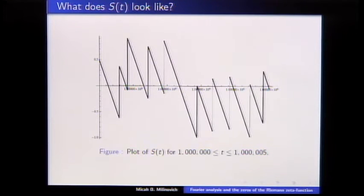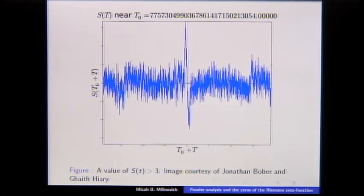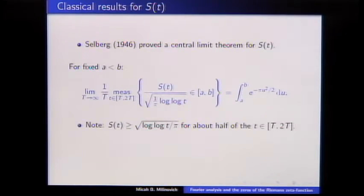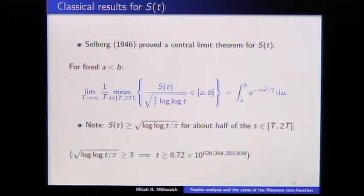Looking back at Odlyzko's papers describing his computations in the 80s, he never found a value of S(t) bigger than 3 and stated that as an open problem. Jonathan Bober and Guy Hiary have found large values of S(t) up around that height. But Selberg proved a central limit theorem: S(t) divided by roughly square root of log log t converges to a Gaussian. So if Odlyzko wanted a value bigger than 3, you'd need to go up around 10 to the 826 billion — you're not going to find it by trial and error.